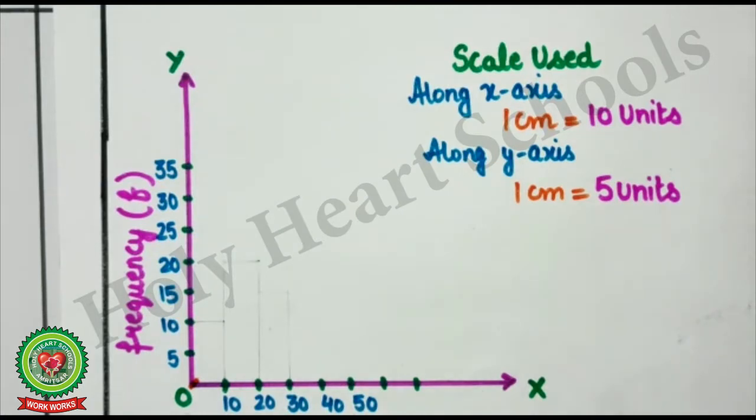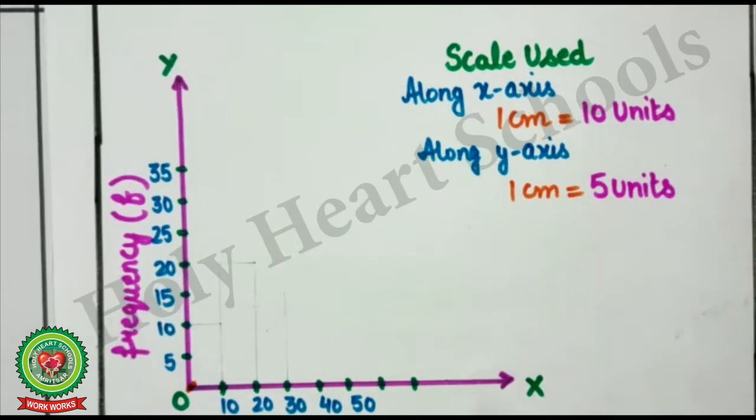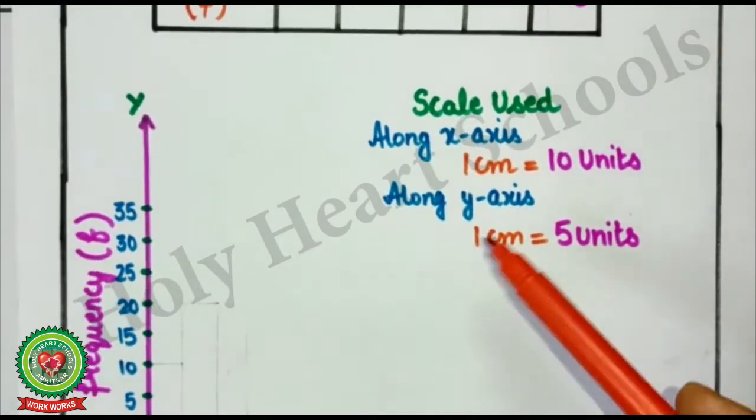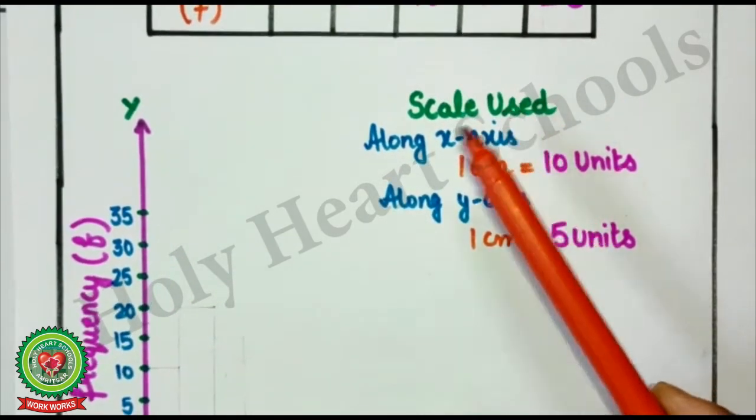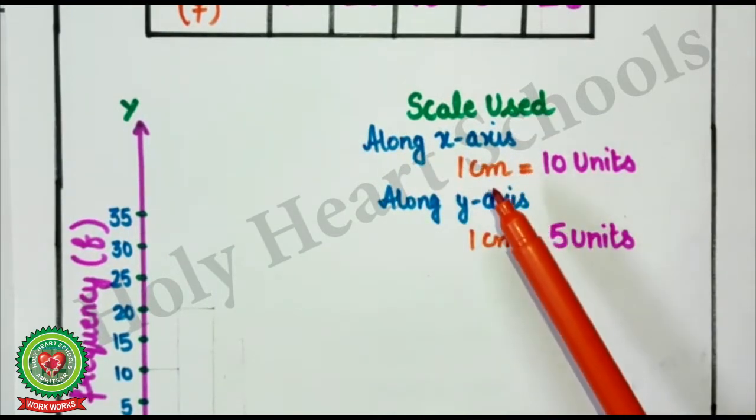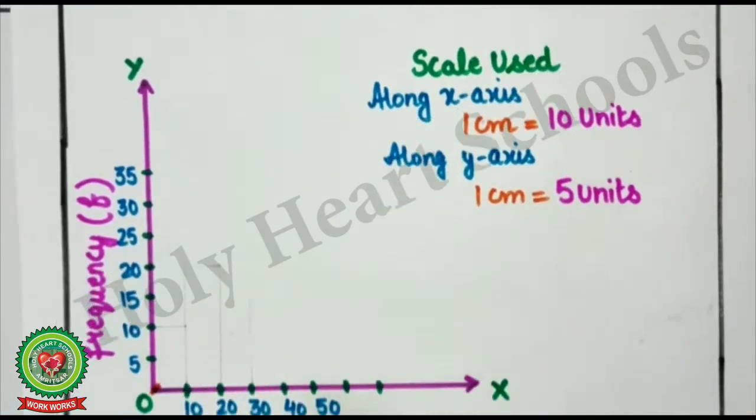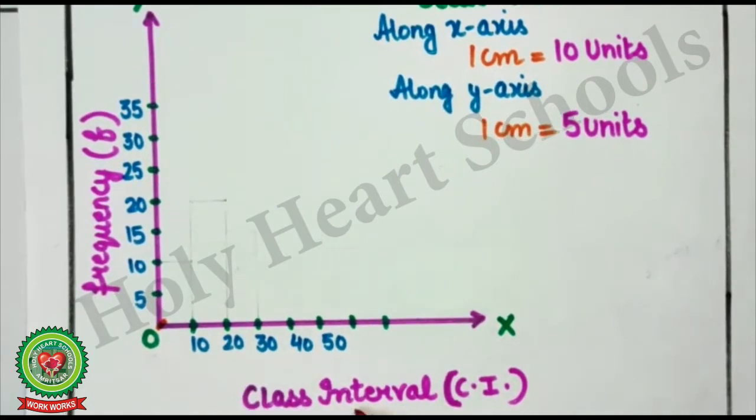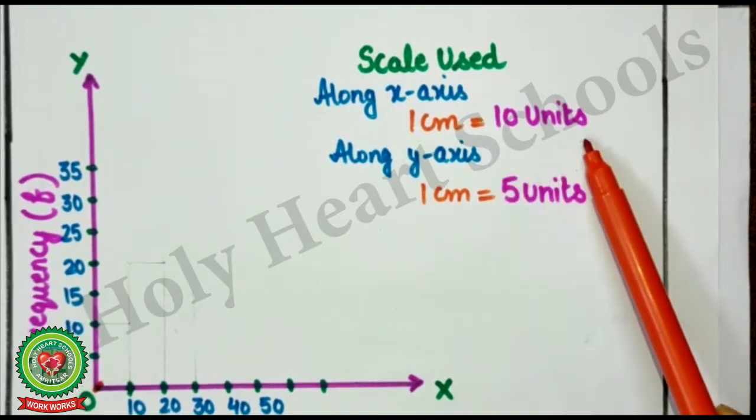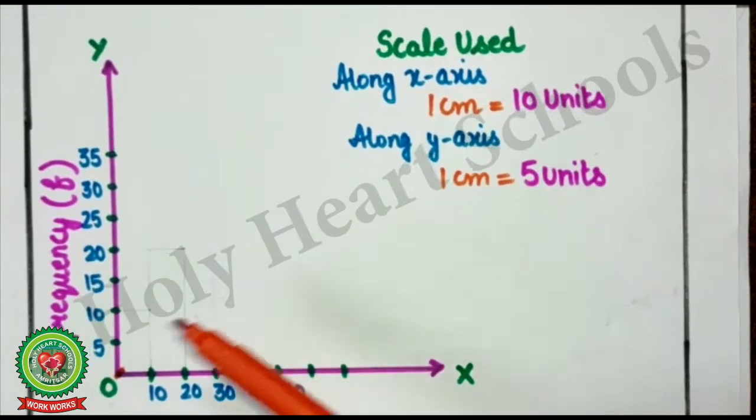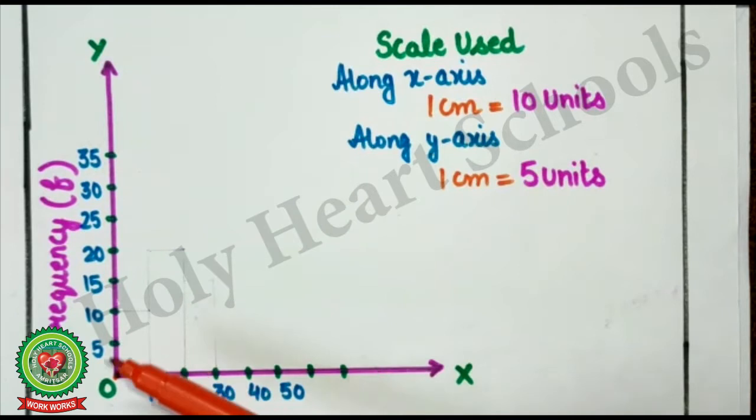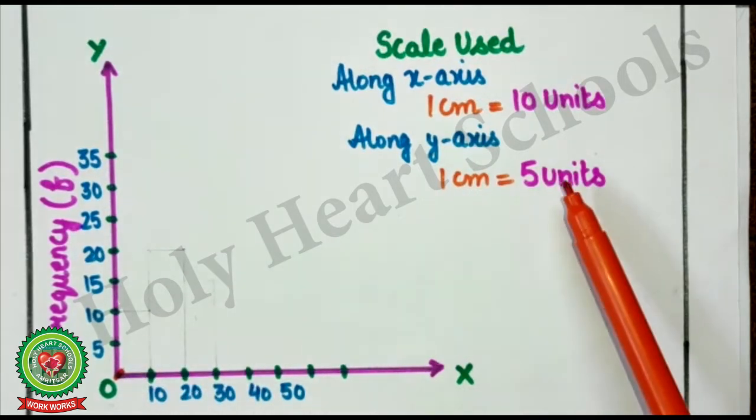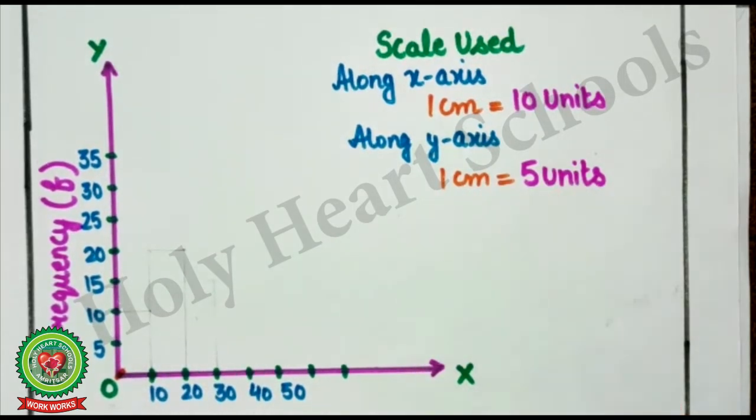Now, the next step. Here, I have to write the scale. So, here, scale used. Along X-axis, 1 cm, 10 difference is there. Class interval is there. So, I will write 10 units. Along Y-axis, 1 cm. Here, I have taken table of 5. So, 1 cm, 5 units.